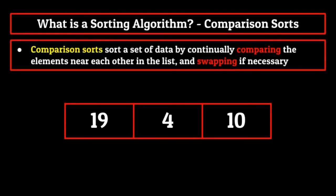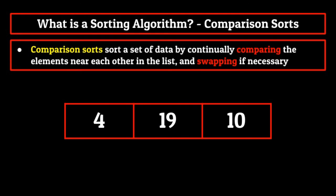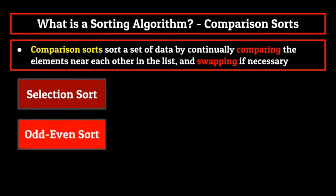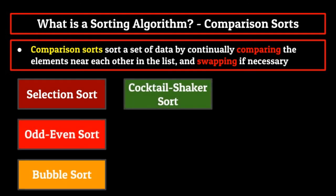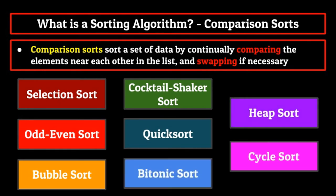The first type of sorting algorithms we're going to be talking about are comparison sorts. These algorithms will sort a set of data by continually comparing the elements near each other in the list and swapping if necessary. Doing this over and over again will result in a sorted list. We'll talk about a good number of comparison sorts, such as selection sort, odd even sort, bubble sort, cocktail shaker sort, quick sort, bitonic sort, heap sort, and cycle sort. Each of these in some way will compare the values within them until a sorted list is achieved.